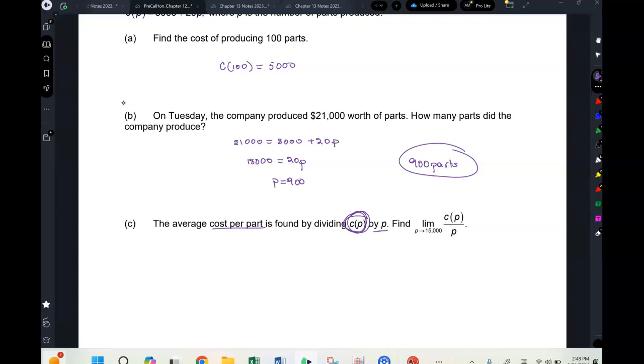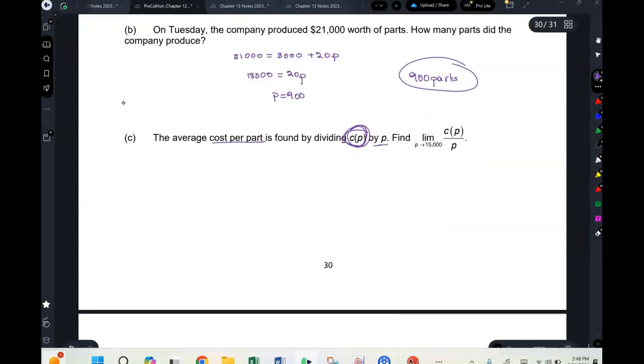That makes sense, right? The c is the total cost, p is how many you've produced. So if however much it costs you to make a thousand t-shirts divided by a thousand, that's the cost per t-shirt. So let's find the limit as p approaches 15,000.